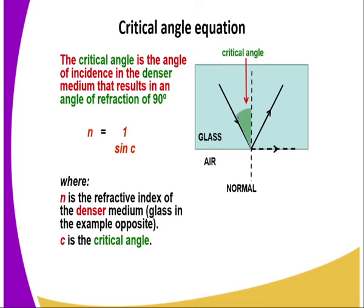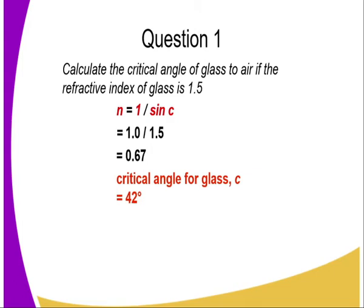As you can see from the illustration, the critical angle of the glass is the angle of incidence for which the angle of refraction is 90 degrees. So beyond this angle, total internal reflection takes place. As you can see, the angle of refraction is 90 degrees. So let's see whether we can solve questions regarding critical angle.